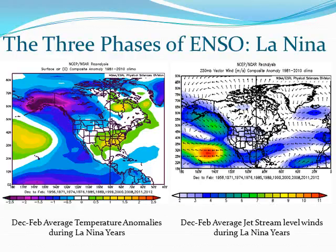The next phase of ENSO I will talk about is La Niña. On the left is a diagram showing December to February average temperatures during previous La Niña years beginning in 1956. When all these La Niña years are averaged together, note the prevalence of below average temperatures in the Pacific Northwest. In Washington and Oregon, temperatures averaged approximately 0.5 to 1 degree Celsius below normal during these La Niña years. Also note the area of above normal temperatures developing in Texas and continuing eastward across much of the southern U.S.